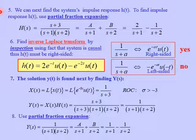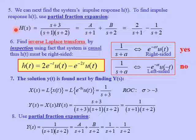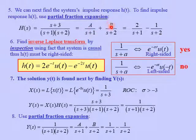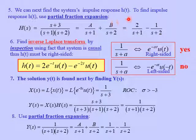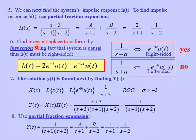The next step is to find the system's impulse response. To find the impulse response, we can start by taking the partial fraction expansion of the transfer function H(s). H(s) is (s + 3) over (s + 1)(s + 2), and we can break this apart into two pieces: A over (s + 1) plus B over (s + 2). Using partial fractions, the coefficient A is 2 and the coefficient B is -1.